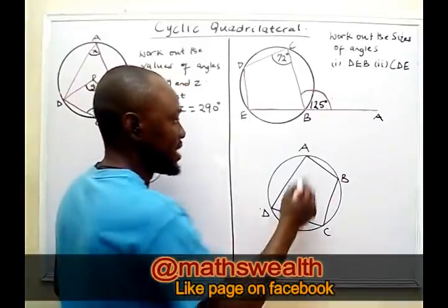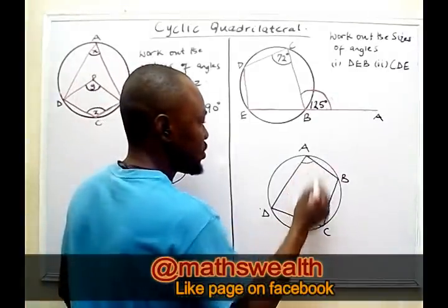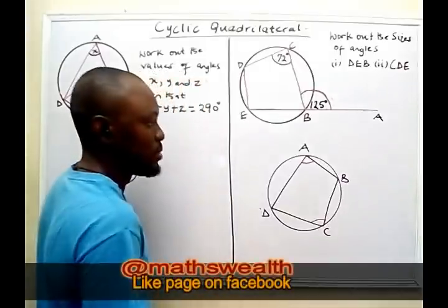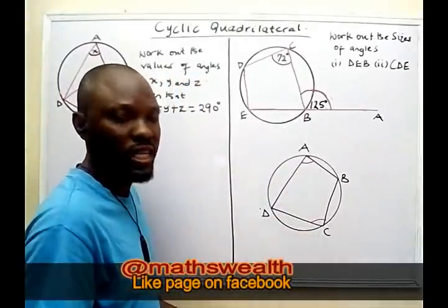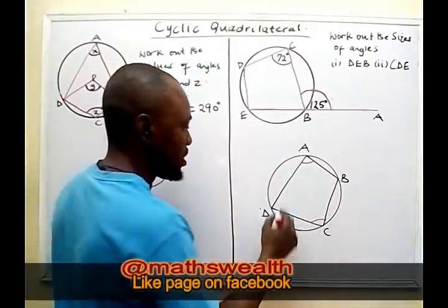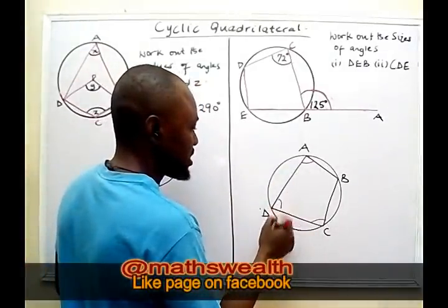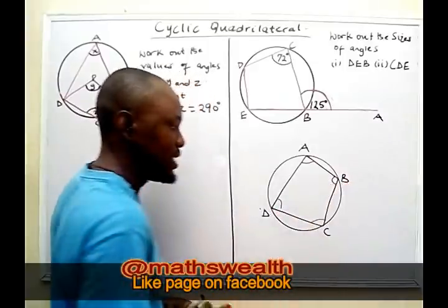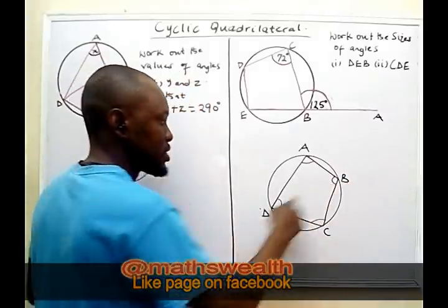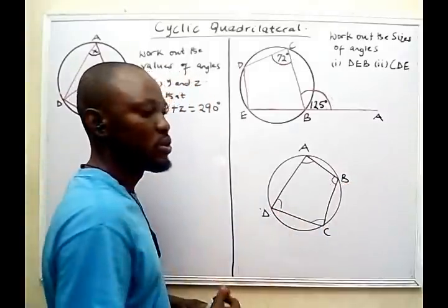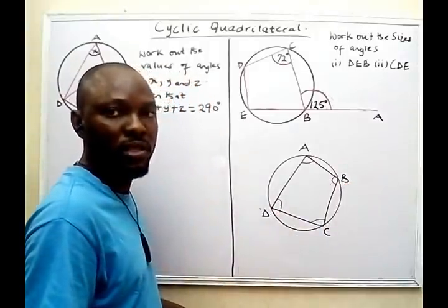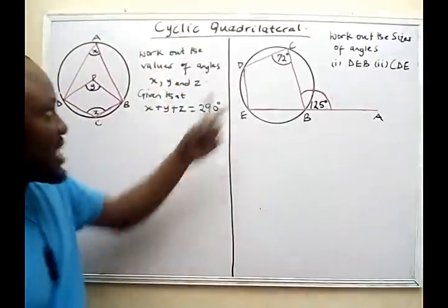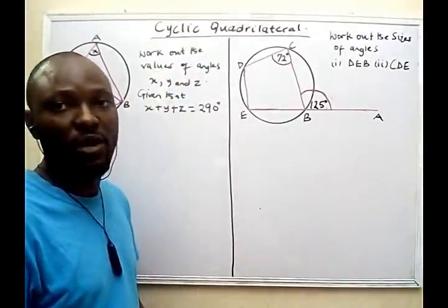So what the theorem states is that opposite angles add up to 180 degrees. For example, angle D plus angle B equals 180 degrees. Now let's start with the question.